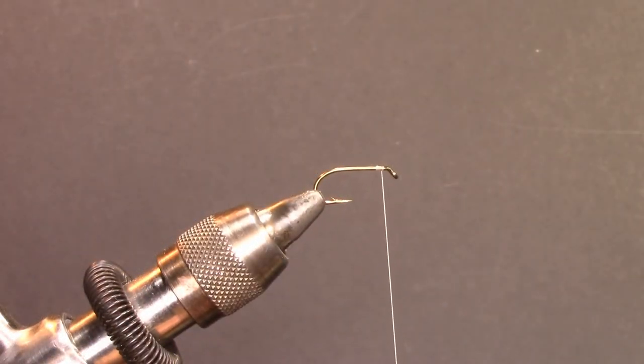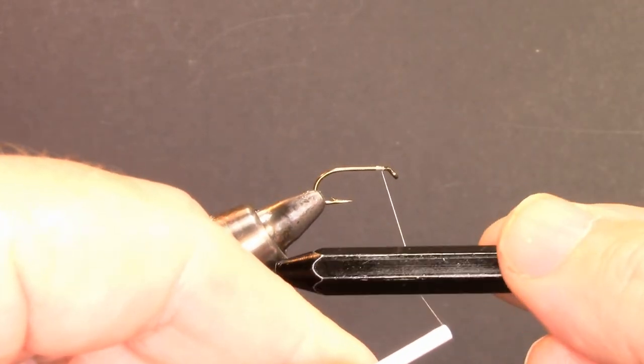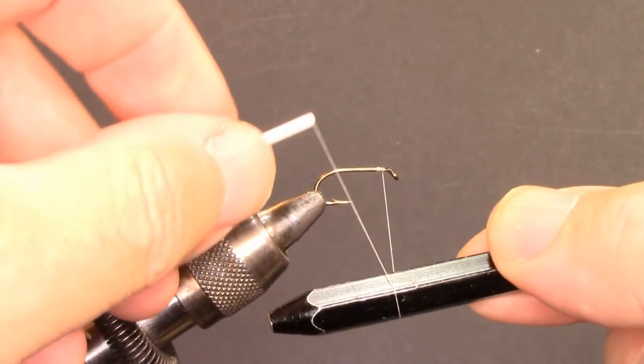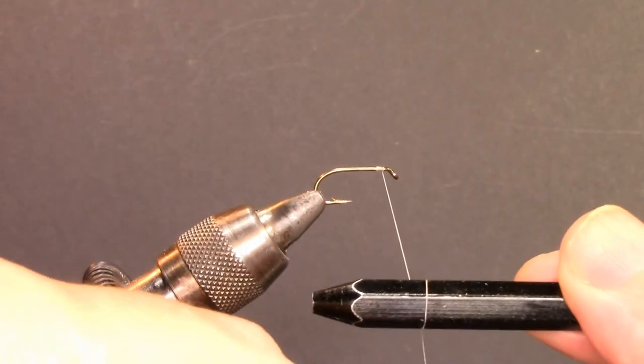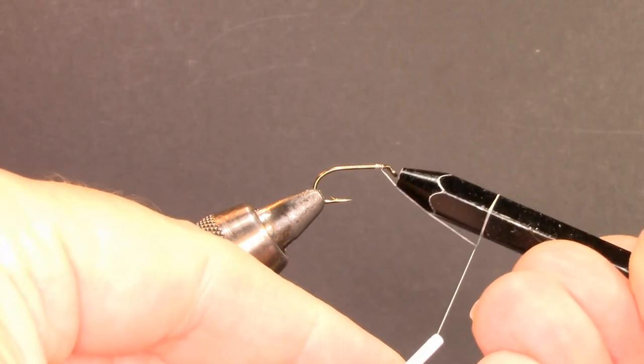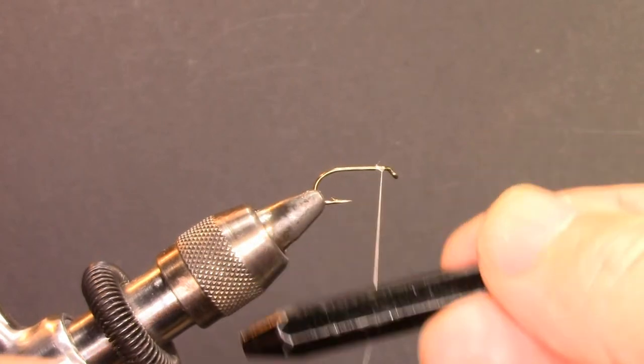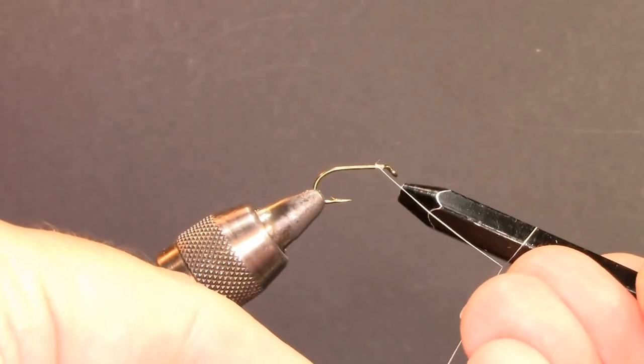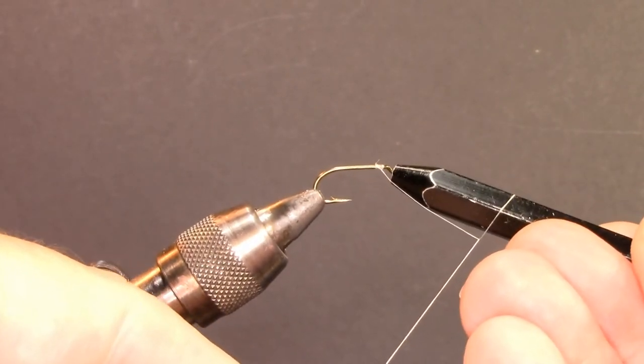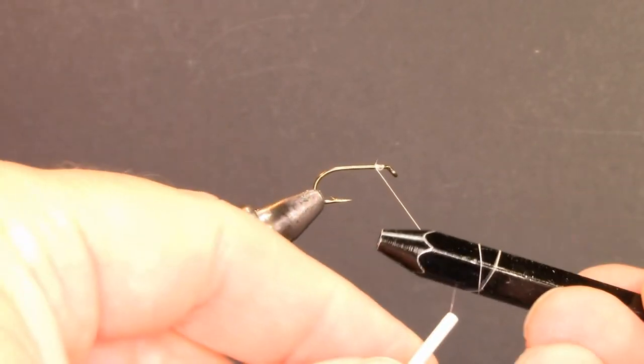How to use a half hitch tool: lay it against the thread like so. You can wrap once, I like to go twice around the tool. Bring the tool up to the eye and just slide it over. Some people use just a single half hitch, and I like to do a double.